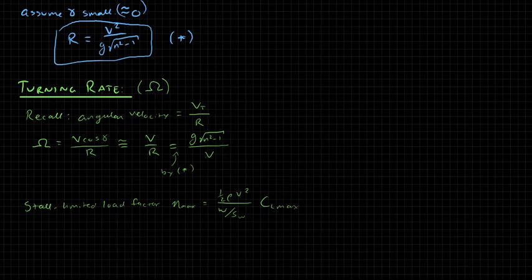If we plug that in to our equation here, then what we'll get is the maximum turning rate that we can get before we stall. So I guess the stall limited maximum turning rate is what we'll call it.